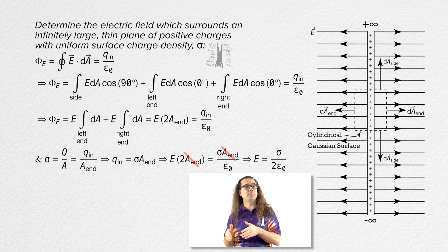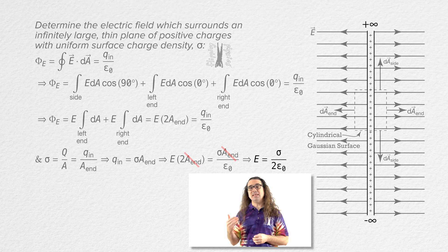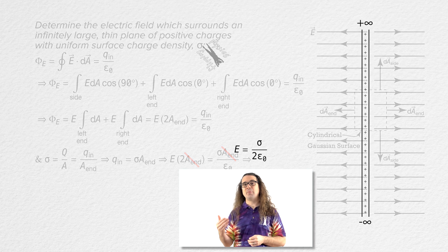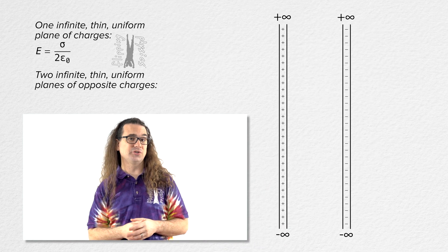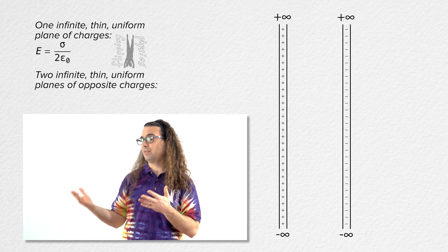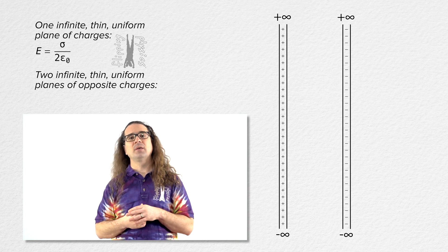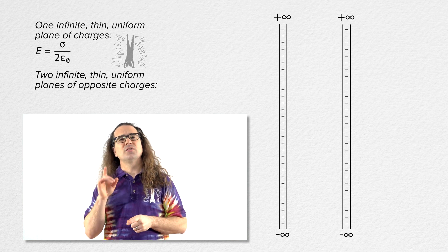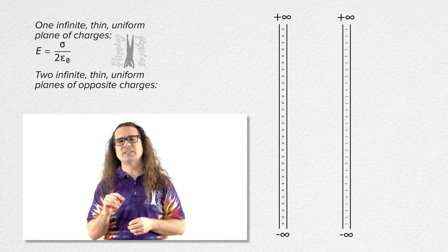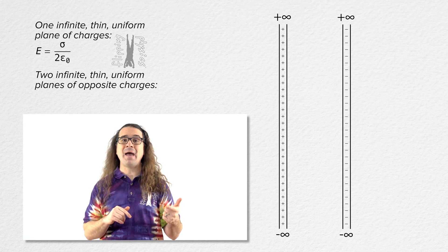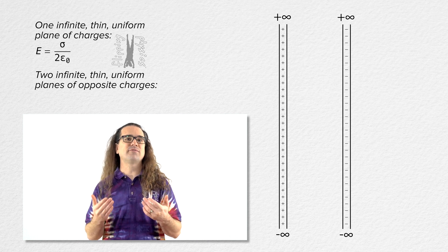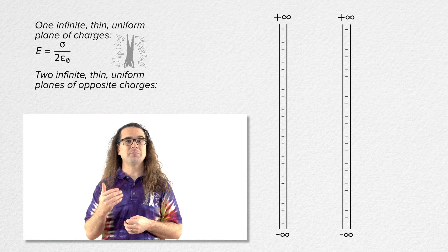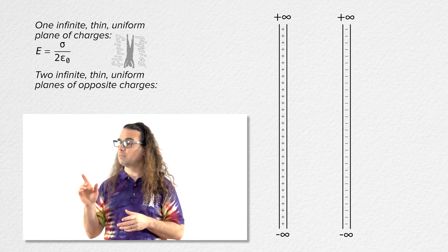Let's take this example one step further. What if we add an equal magnitude parallel infinite plane of negative charges? Note that the surface charge density in the equation now refers to the magnitude of the surface charge density, which is the same for both infinite planes.